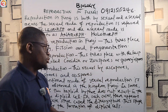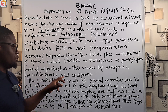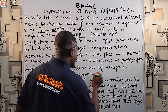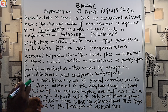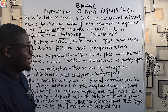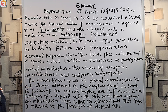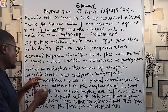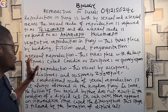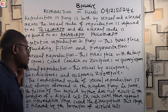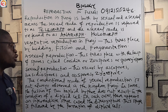Sexual reproduction in fungi occurs by ascospores, basidiospores, oospores, and zygospores. We have talked about the classification of fungi based on spore formation: the Ascomycetes produce ascospores, the Basidiomycetes form basidiospores, and others have oospores and zygospores. Please take note that sexual reproduction occurs by ascospores, basidiospores, oospores, zygospores, and the like. Also note that the conventional mode of sexual reproduction is not always observed in the kingdom Fungi.